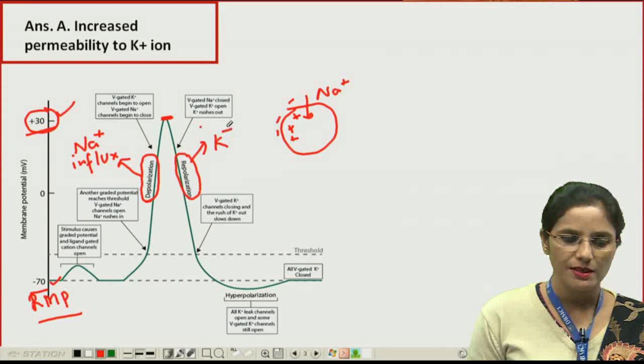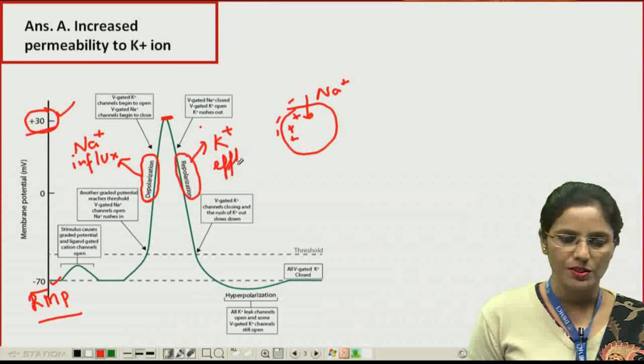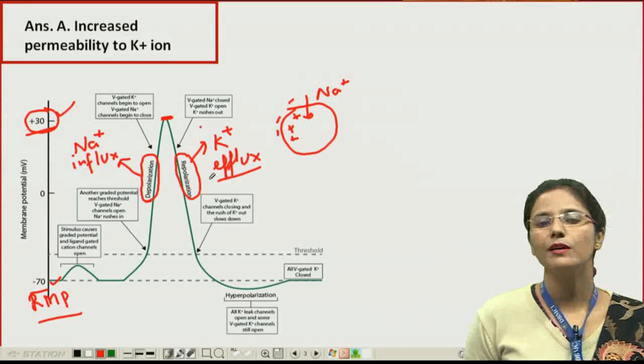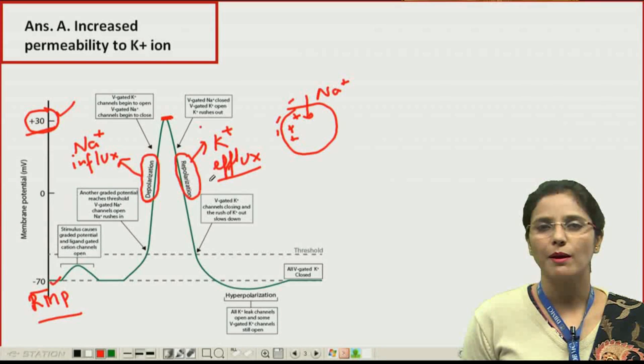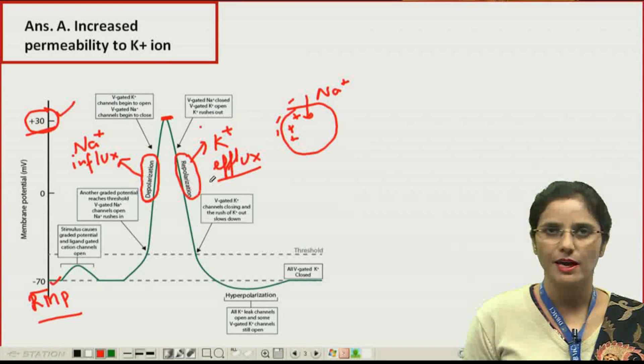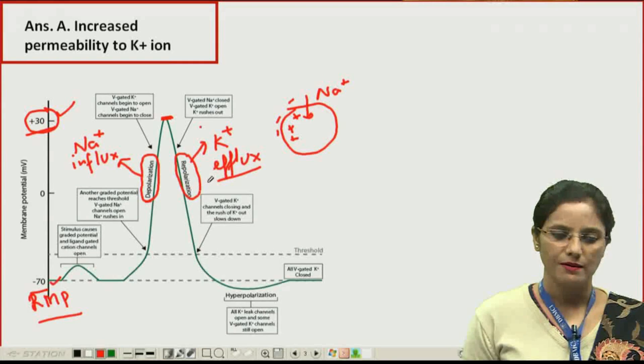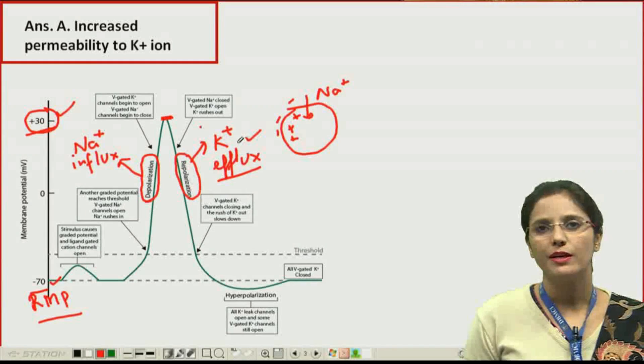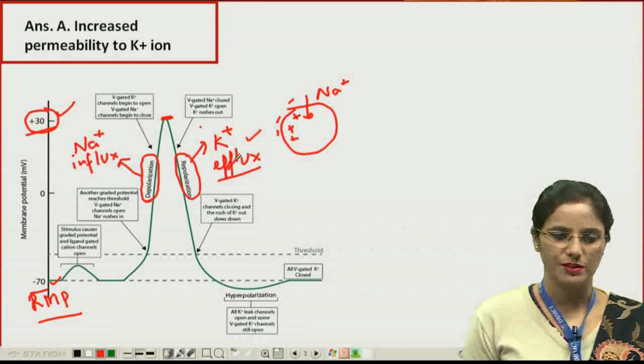This repolarization phase is mainly because of potassium efflux. So during the repolarization phase, the permeability of potassium is increased, and it is potassium efflux which is responsible for the repolarization phase of the action potential in the neuron.